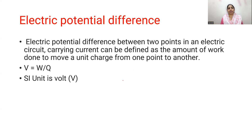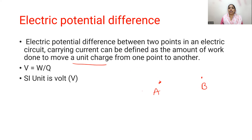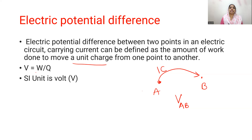The next term is electric potential. Potential difference is the amount of work required to bring 1 unit charge from one point to another. A and B are two different points. How much work you have to do in bringing 1 Coulomb of charge from point A to point B — that is the potential difference between A and B. V is the symbol of potential difference, and W by Q is the mathematical formula.